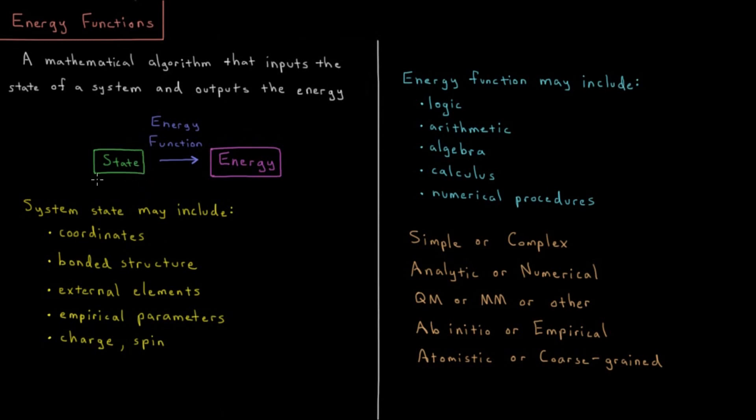We have some set of specifications which indicates the current state of whatever system we're looking at, whether that's an atom, a molecule, an electron, an entire nanotube. Whatever our system is, we have some set of data that indicates its state.